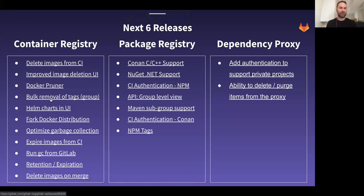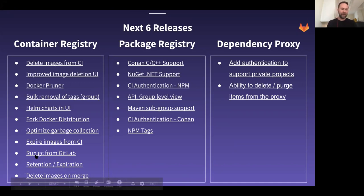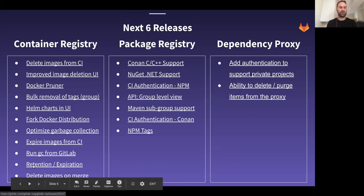A couple of other things worth calling out: a new API for bulk removal of tags at the group level. Right now the API is limited to the project level, so for system administrators with many groups and projects, this is time-consuming. Giving group-level ability there will be really valuable for cleaning up the registry. We also want to expire images from CI — currently for artifacts you can add a line to your GitLab CI YAML file that says 'expire in seven days.' We'd like to do the same thing for images and tags. And as we've improved the garbage collection command, we want to enable users to run and schedule it from GitLab without running it manually, and add more retention and expiration policies to programmatically decide how images and tags are removed.